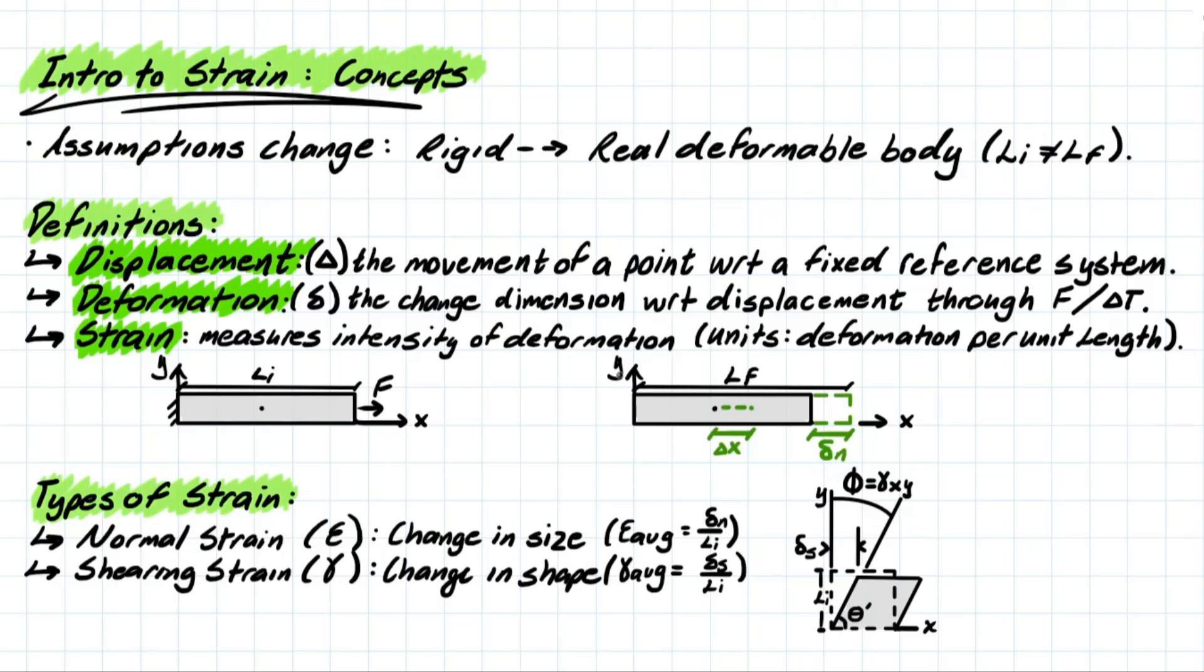So what that means is we're going to be taking this deformation and looking at this element with a new final length that it comprises. And the difference between that initial and final length is going to give you that deformation. And if we compare that deformation to the initial length of our element, we will be able to calculate our strain.